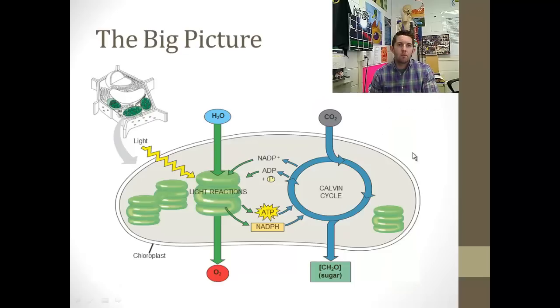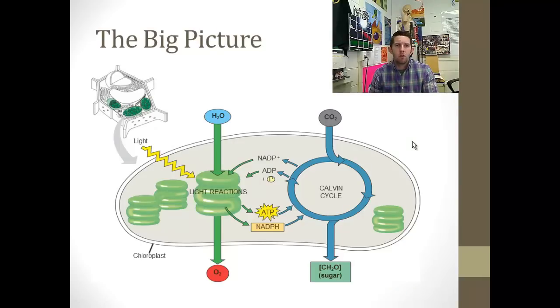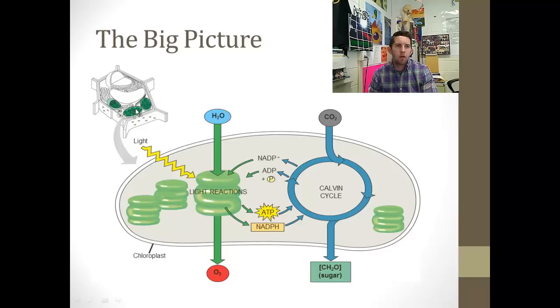First, the big picture with a little bit of a review on the light reactions and how they help with the Calvin cycle. We can see this whole thing happening inside the chloroplasts of a plant cell and some photosynthetic bacteria.